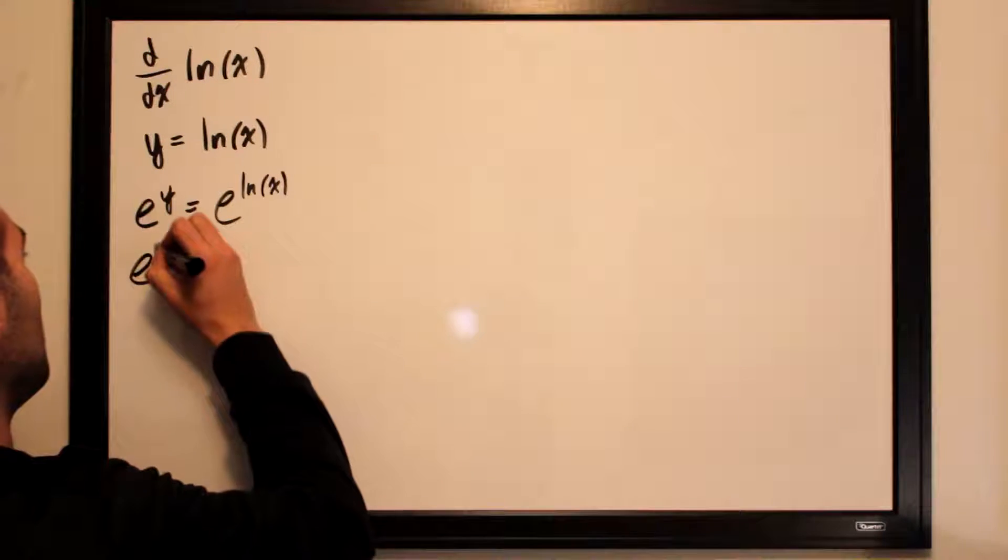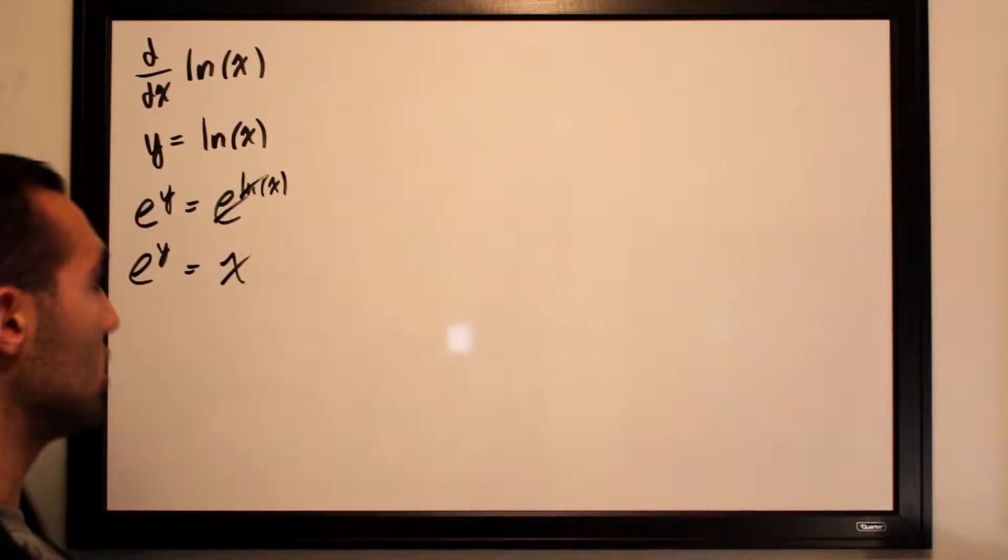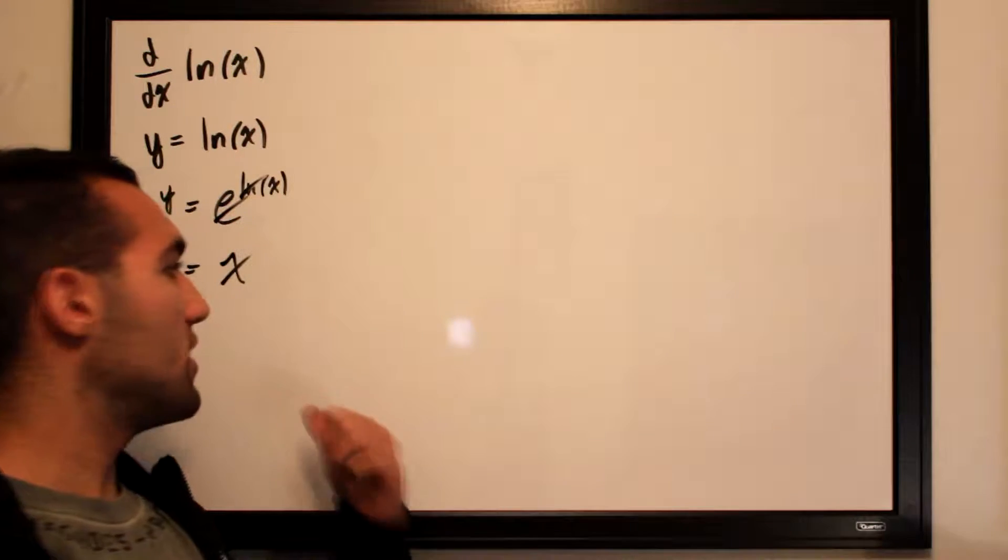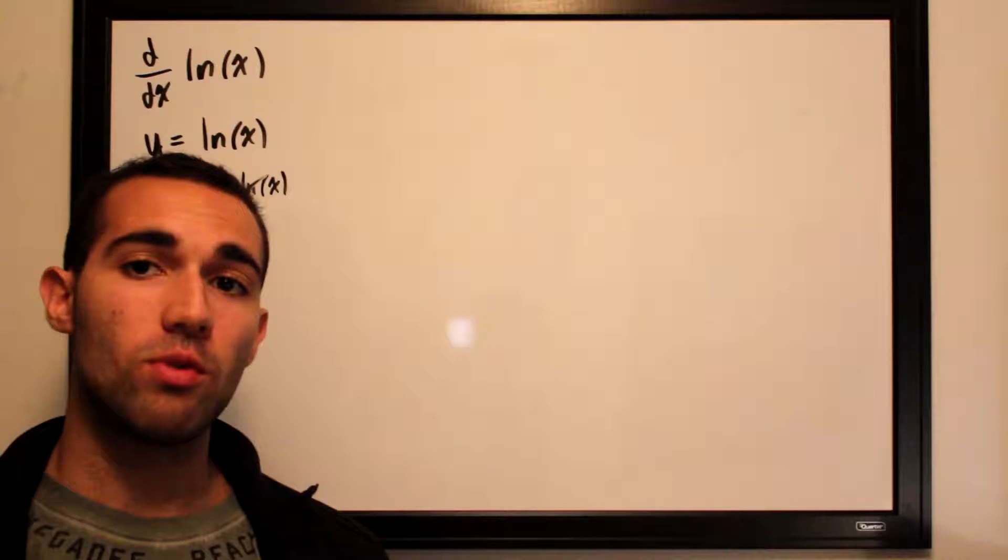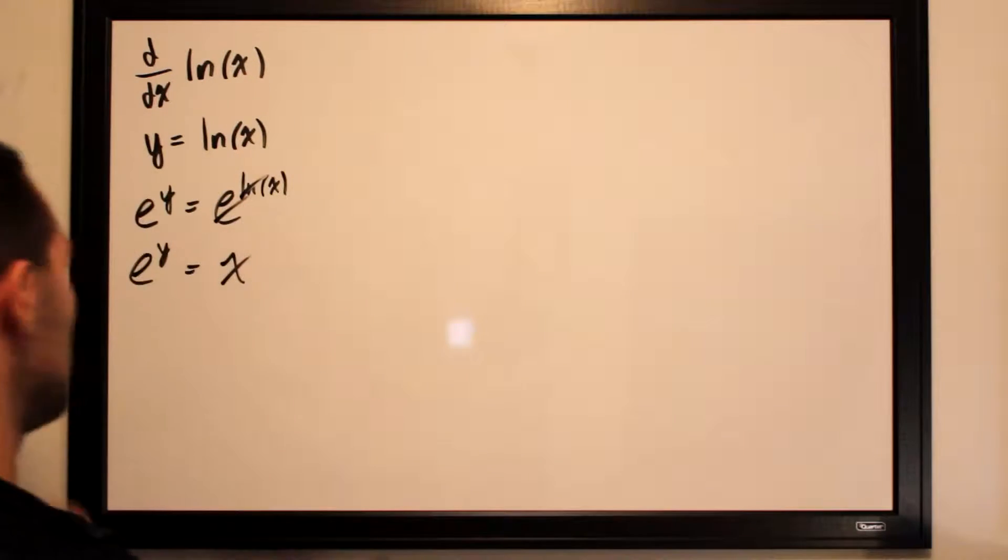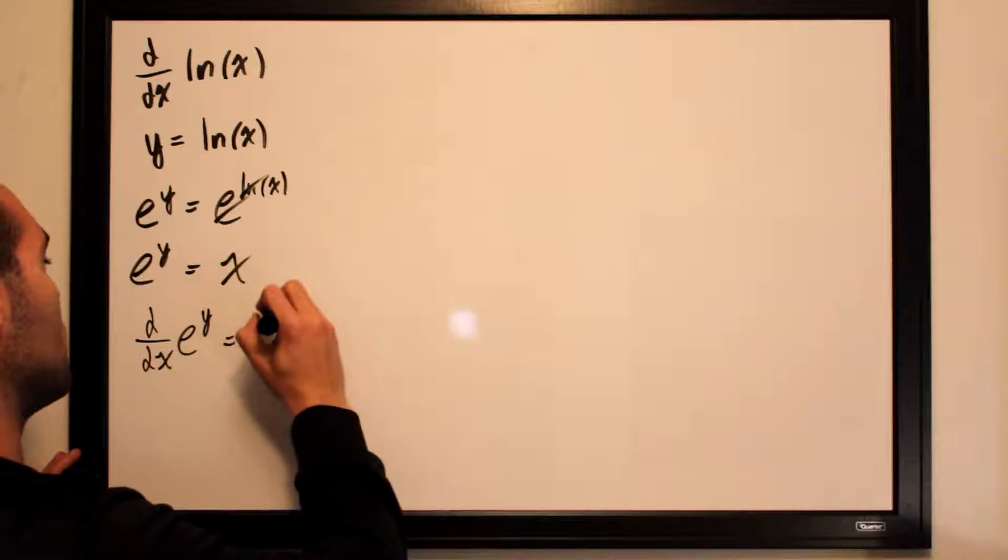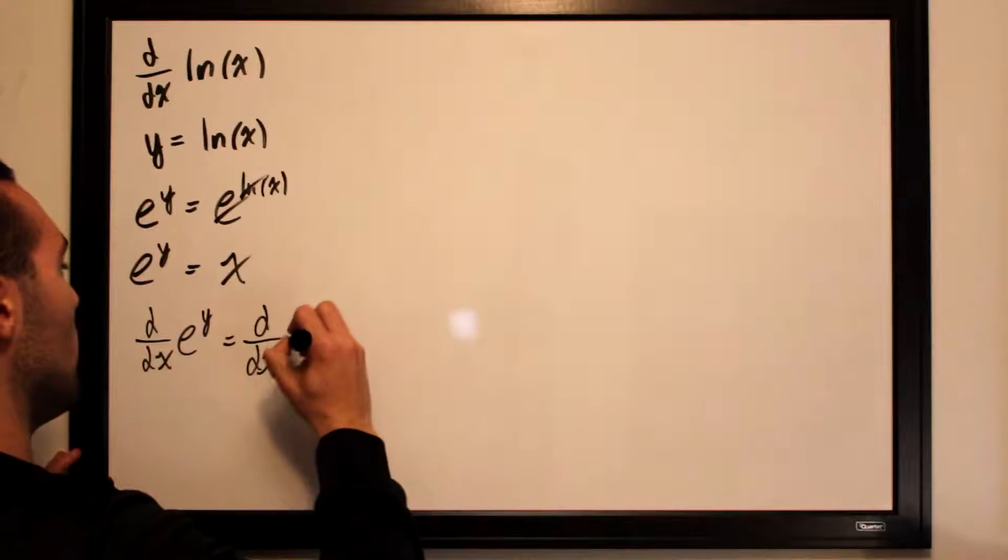So all we have left on this side is going to be x. So e to the y is going to be equal to x, seeing as the e and the ln will cancel each other out. And what we want to do now is differentiate both sides with respect to x.